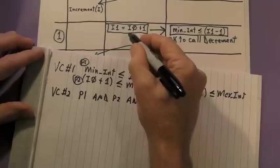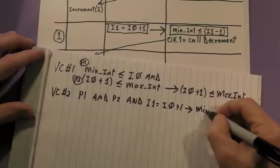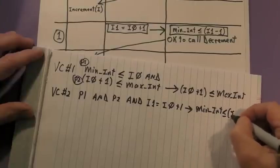And now, we write down the premise from state number 1, which is I1 equals I0 plus 1, followed by the implication symbol, followed by the conclusion from state 1.